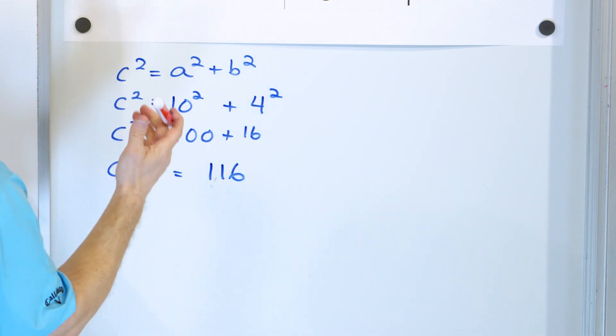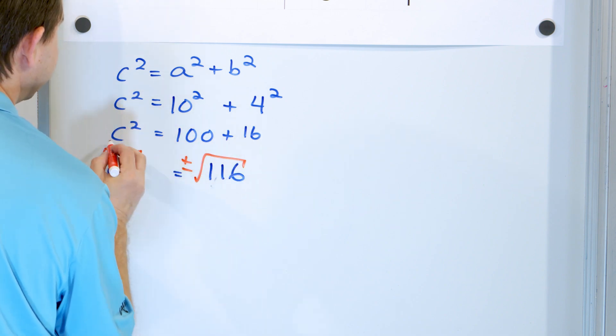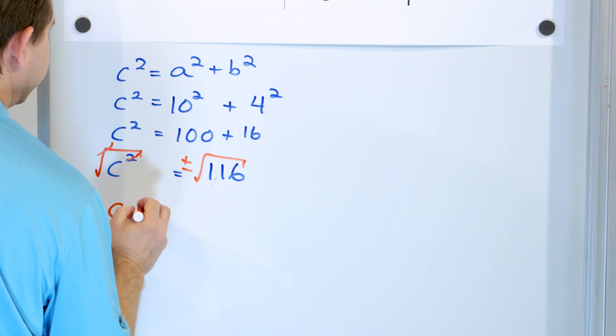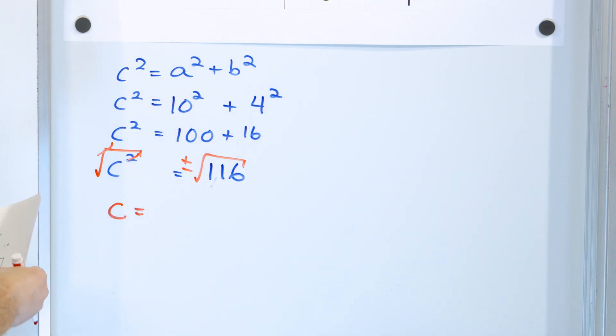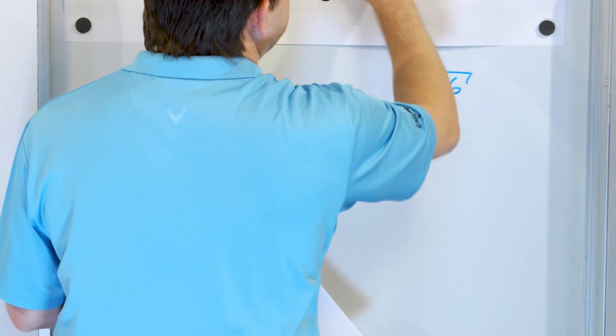And in order to solve for that, we're going to do the opposite of the square. We're going to apply the square root and add our plus or minus here. And so we have the distance C is equal to this. So we have to figure out what the square root of 116 is. So we go over here and say, what is the square root of 116? It's an even number, so it's divisible by two,